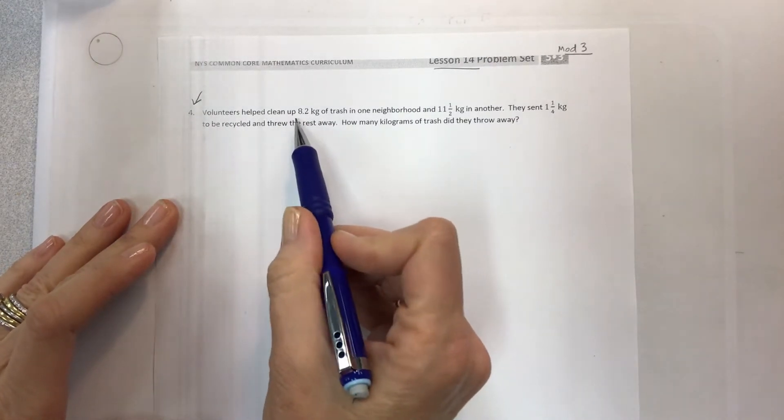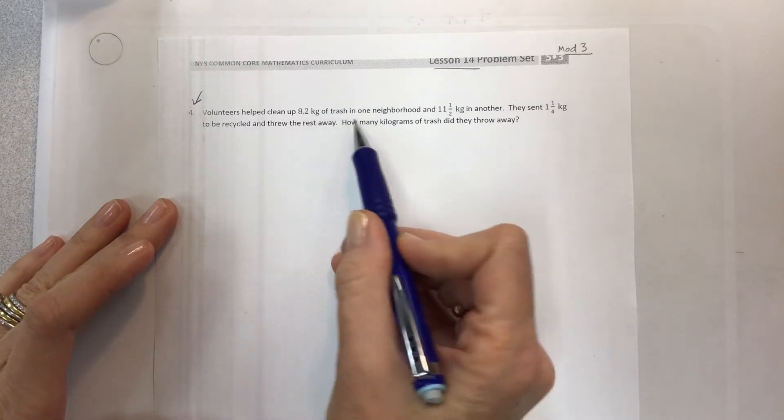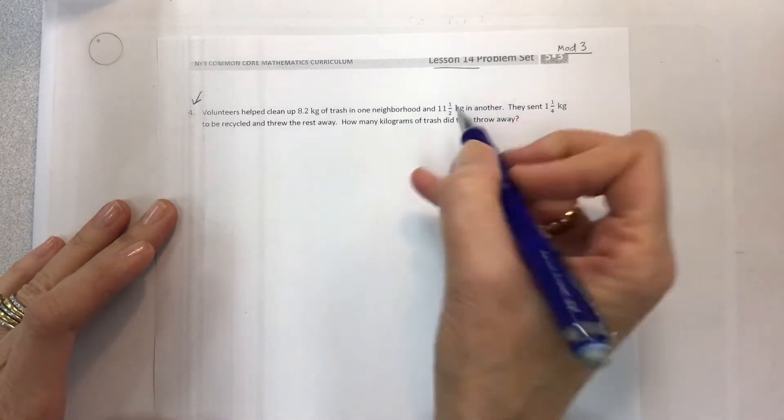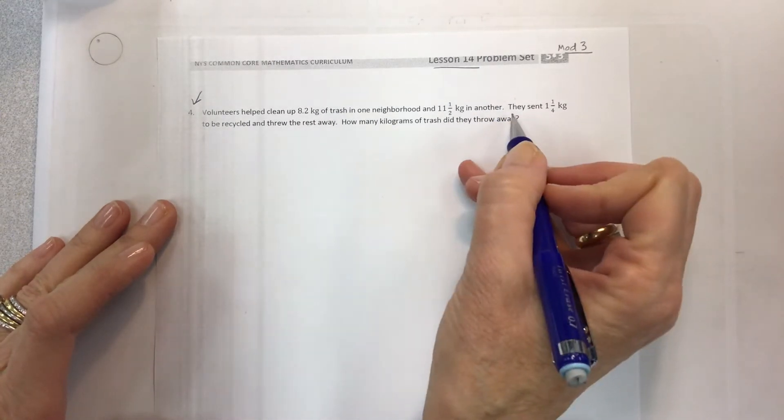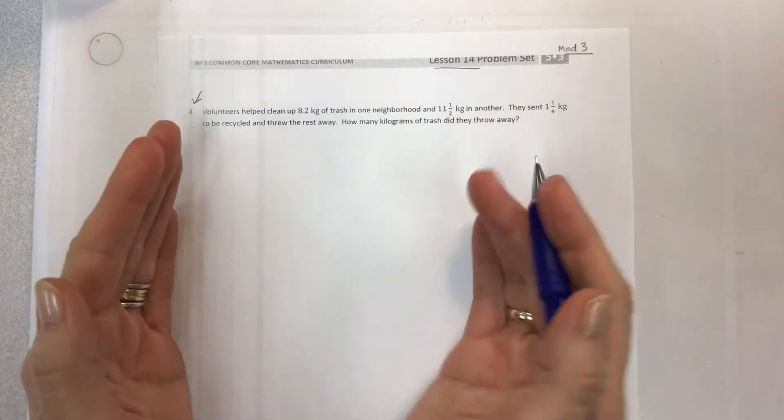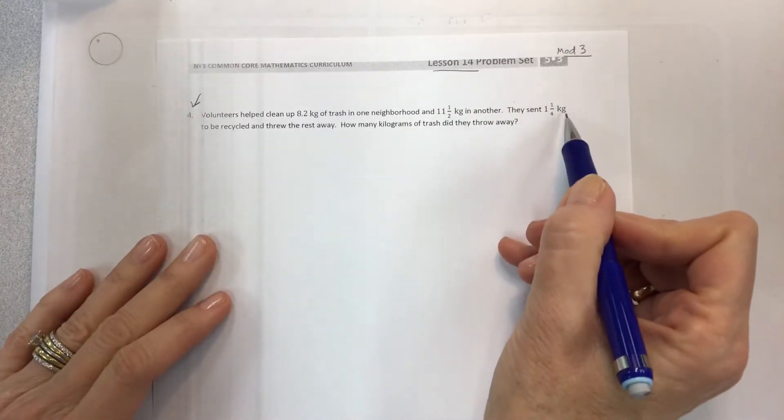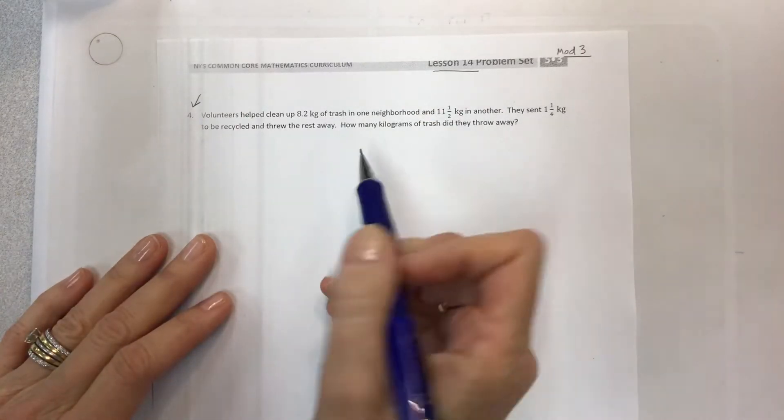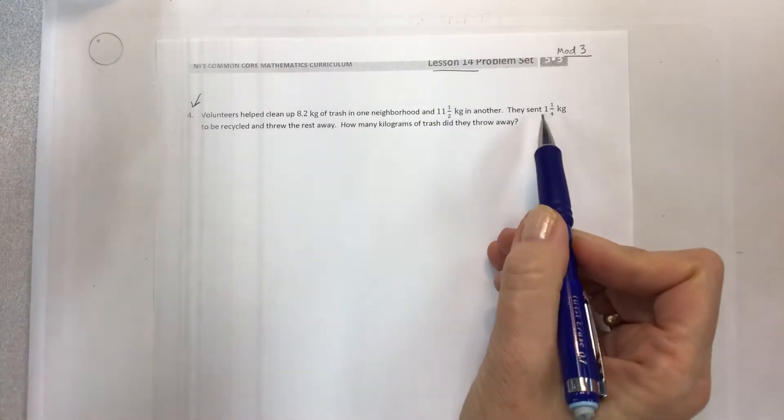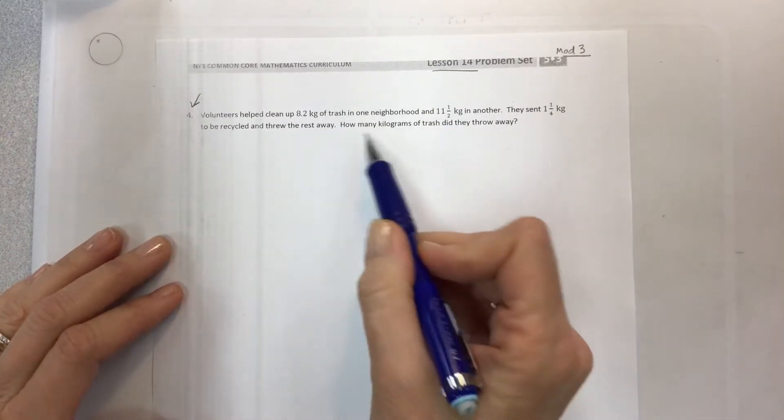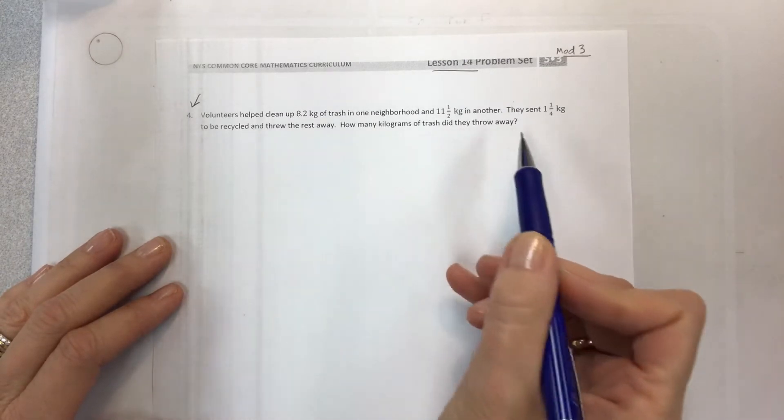So here it is. Volunteers helped clean up 8 and 2 tenths kilograms of trash in one neighborhood and 11 and a half kilograms in another. Now out of all this trash, they sent 1 and 1 fourth kilograms to be recycled and threw the rest away, which is kind of common because a lot of stuff isn't recyclable. So how many kilograms of trash did they throw away?